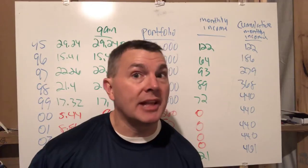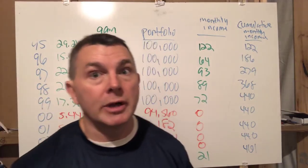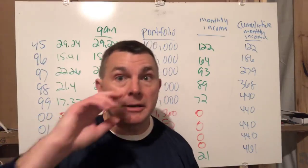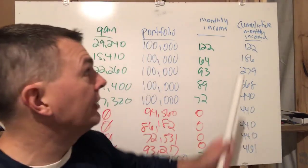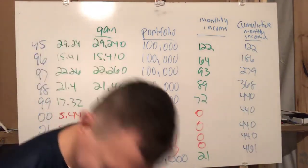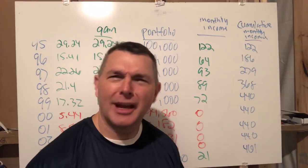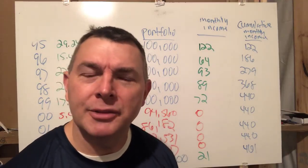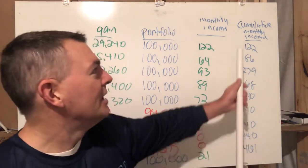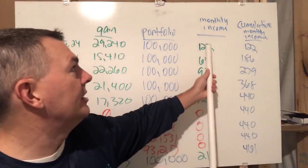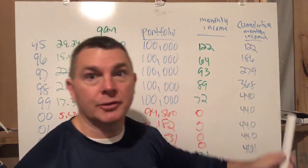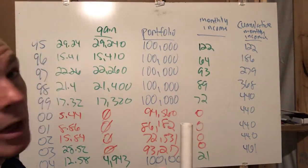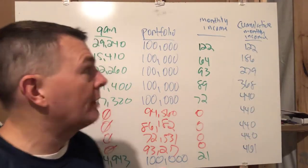I'm rounding up or down depending on the numbers, but we get a hundred twenty-two dollars a month guaranteed. We're not adjusting that for inflation — it is fixed. We're not talking about inflation-indexed annuities today. So that's one hundred twenty-two dollars a month guaranteed for the rest of your life. We add this to our cumulative monthly income — and since there was nothing before, our cumulative monthly income is a hundred twenty-two dollars.